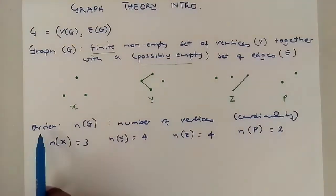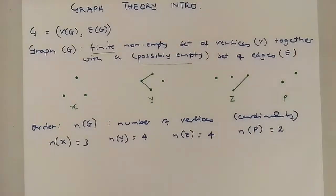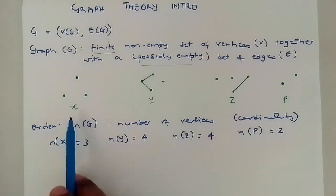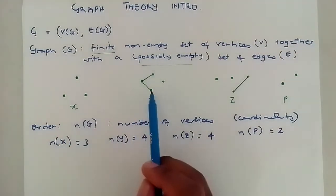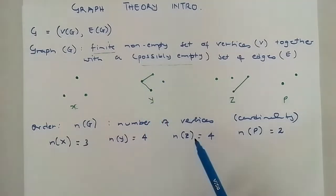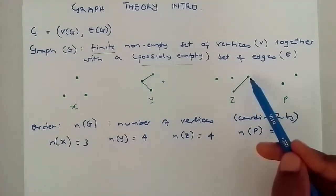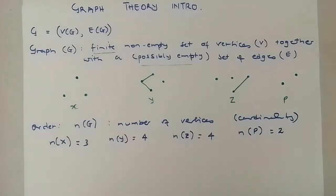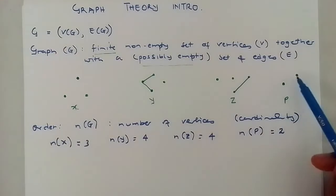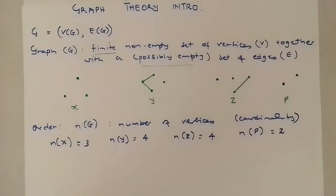So with order, we are asking how many vertices does that particular graph have. X has 3 vertices, Y has 4 vertices, Z has 4 vertices, and P has 2 vertices.